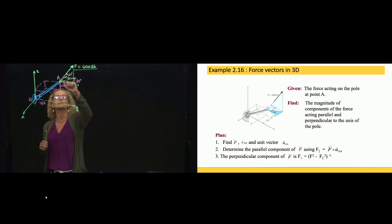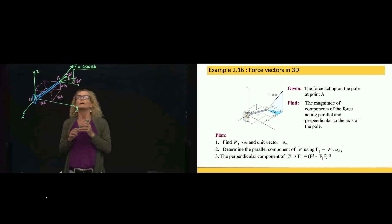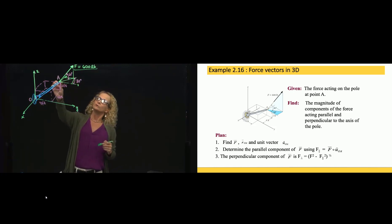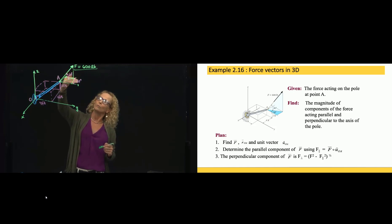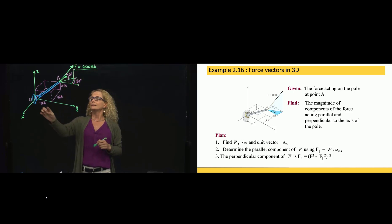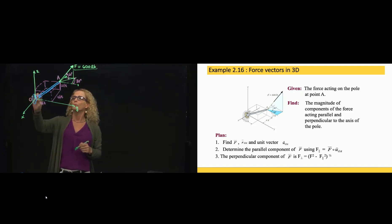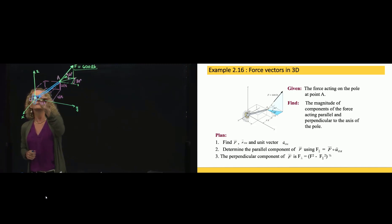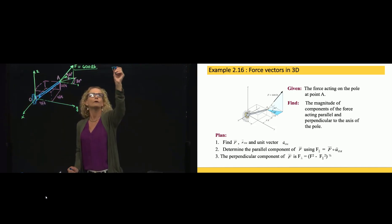This is a negative X direction. They are giving us the direction of that component in the plane with the Y axis and with the X axis. They are giving us a pole, and this force is acting at the end of that pole.